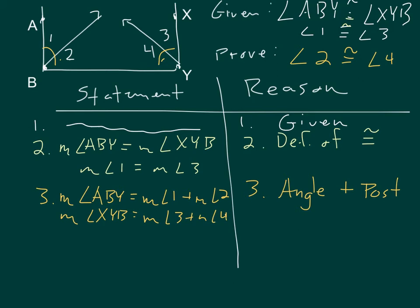So I'm making two basic statements on the angle addition postulate. 3 and 4 add up to give me the big angle. 1 and 2 add up to give me the big angle.